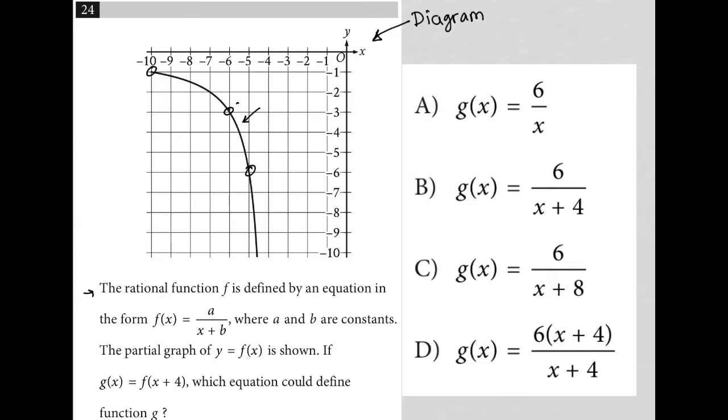The question goes on to say the rational function f is defined by an equation in the form f of x equals a over x plus b. That might be important. Where a and b are constants. The partial graph of y equals f of x is shown. Okay, so this is f of x here, the graph that we're looking at.